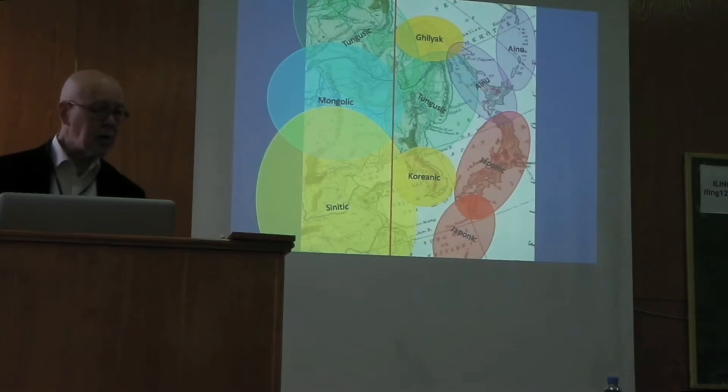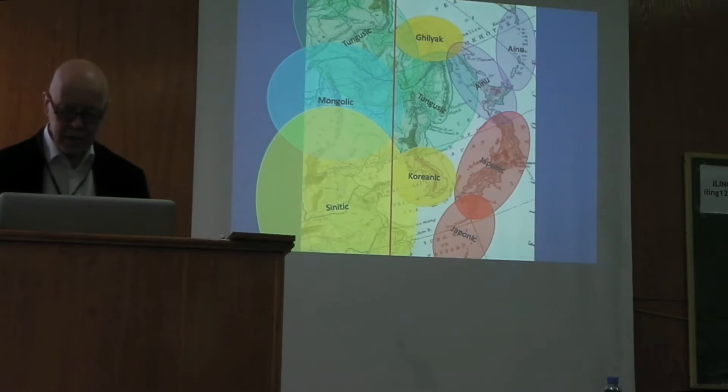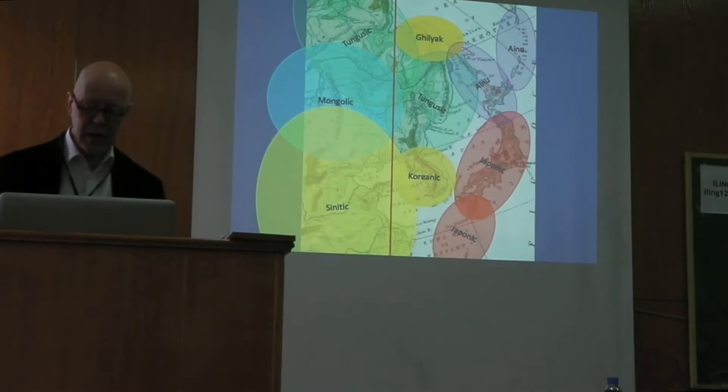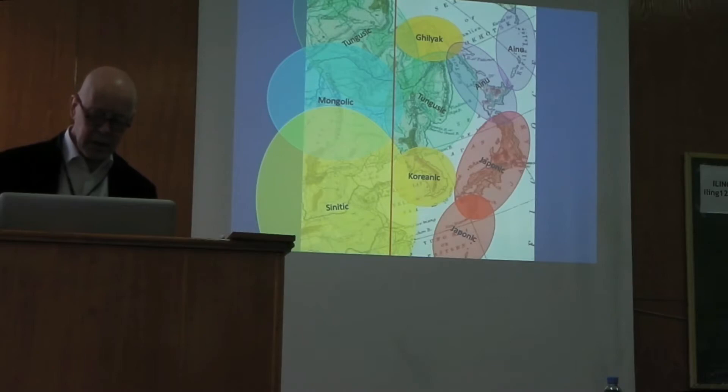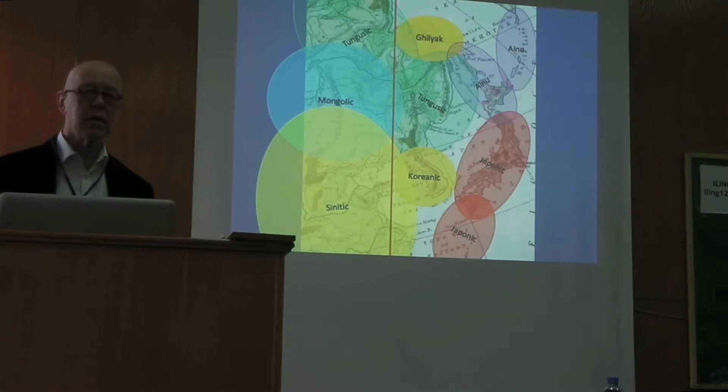A language can rather easily change its total typological orientation and acquire new features. This is very obvious in the case of Japanese. I think Japanese was originally a language of the Sinitic type; it came from the continent to Korea, then was Altaicized in Korea. Then it entered the Japanese islands, where it acquired oceanic features from the Jomon Sprachbund languages.